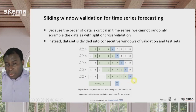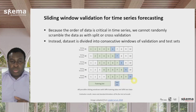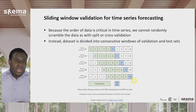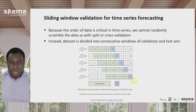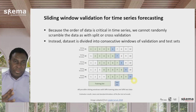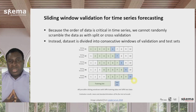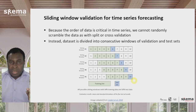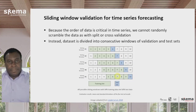With sliding window validation, you can take the average test performance scores, and even get a standard deviation as you would with cross validation. This is the standard way to validate time series analysis data, allowing you to evaluate and validate the performance of time series forecast models.